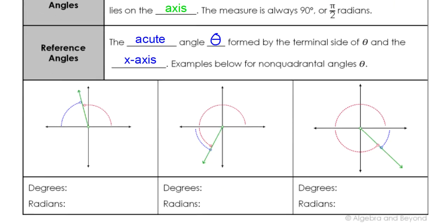Let's practice finding a few of those reference angles. If the angle lies in the second quadrant, then theta is the original angle that started at that positive x-axis. To find the reference angle, we would take 180 — because that is closest — and subtract out that theta angle. So to find that reference angle, I'd do 180 degrees minus theta. In radians, it's similar — we don't use 180; since 180 degrees equals pi, I would do pi minus the original theta if it's in radians.